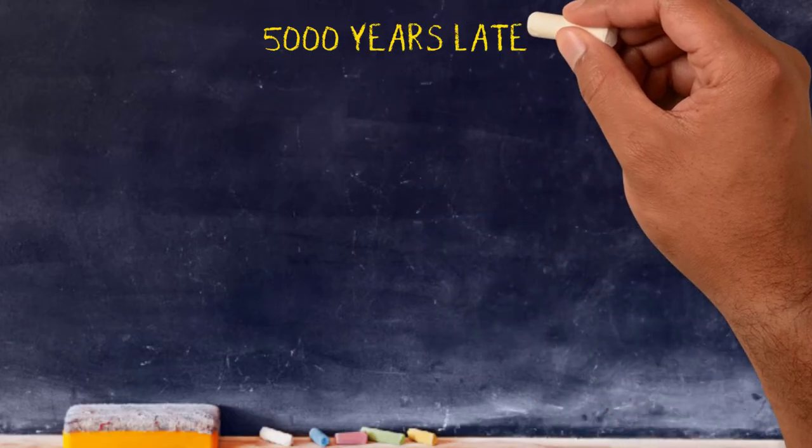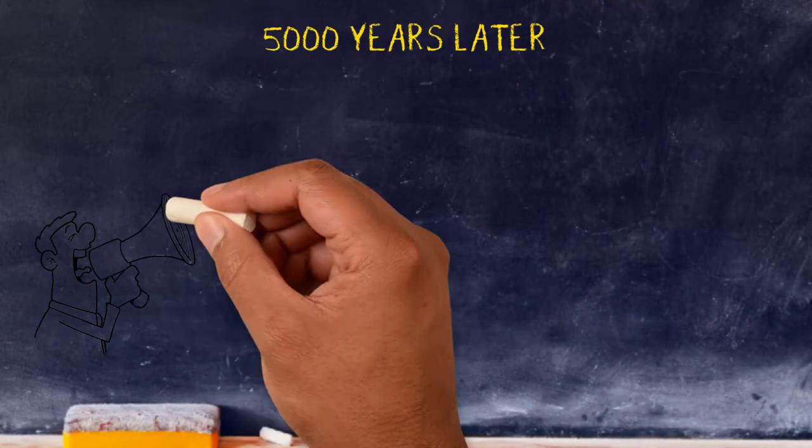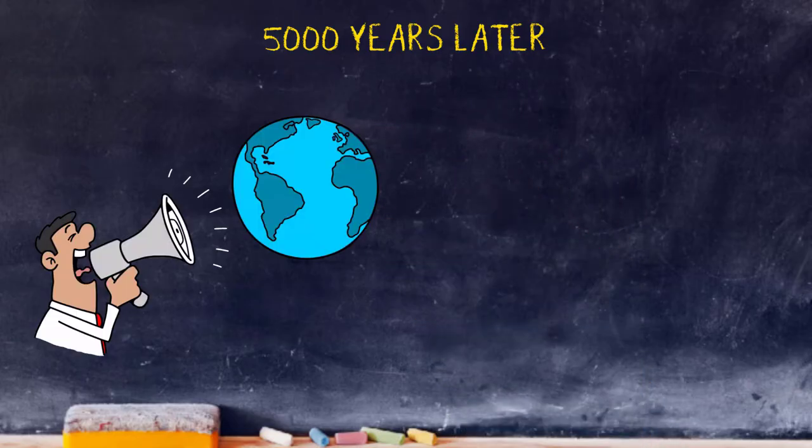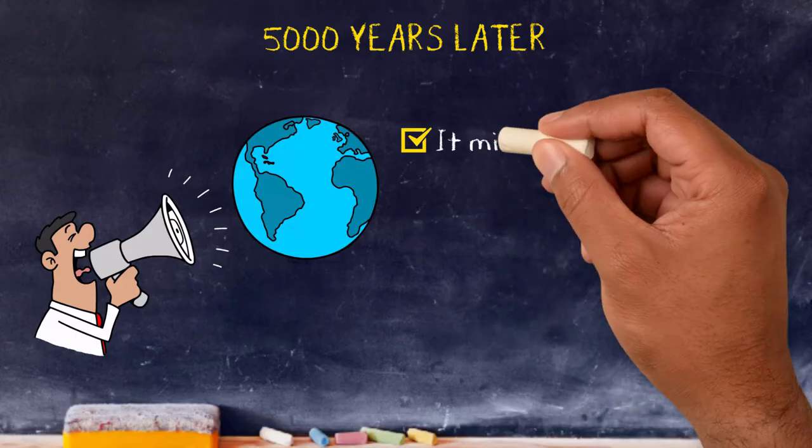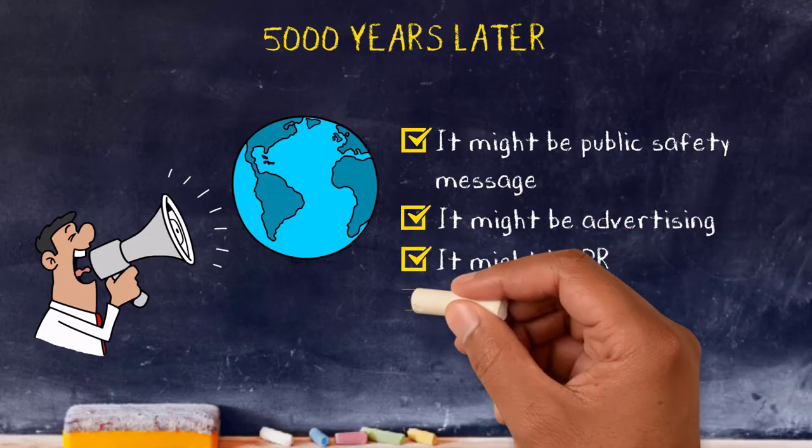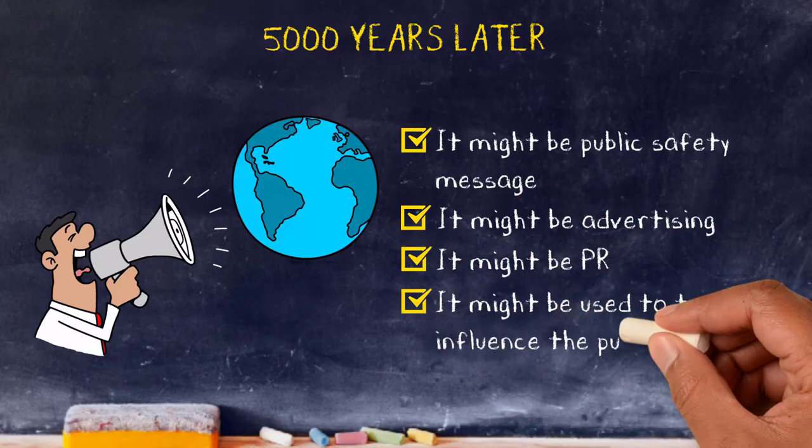Now fast forward 5,000 years and mass communication is still used to get information and messages out to as large a number of people as possible. The information might be a public safety message, it might be advertising, PR, or it could even be used to try and influence the public.